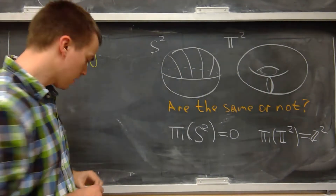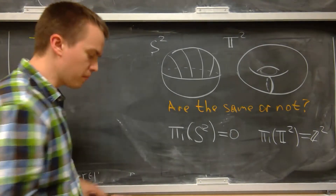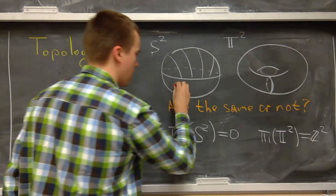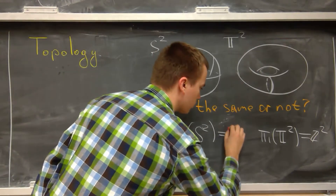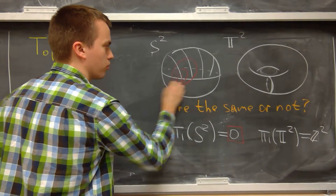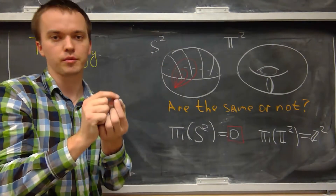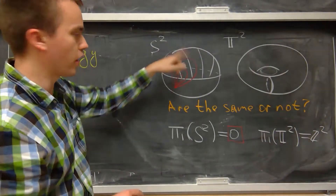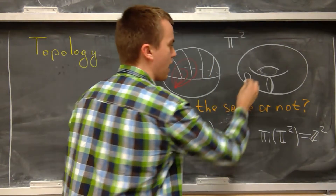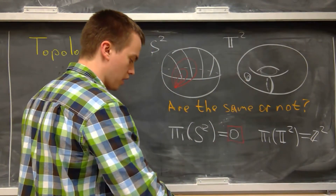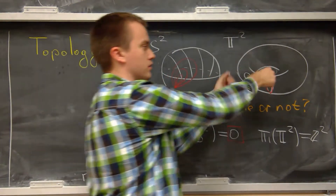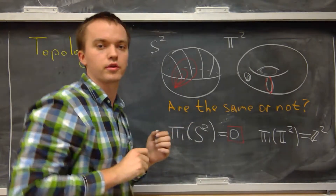Let me explain what the fundamental group is. Take any point on your surface and draw a loop. The fundamental group of S² is trivial because for any loop you draw, you can always shrink that loop down to a point — and this is true for any point on the sphere and any loop. But on the torus, if you take certain loops, no matter how you move them around you will never be able to shrink them to a point.